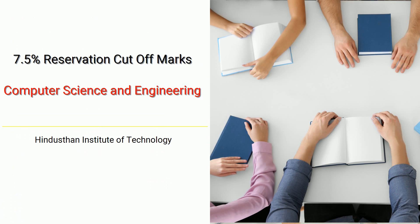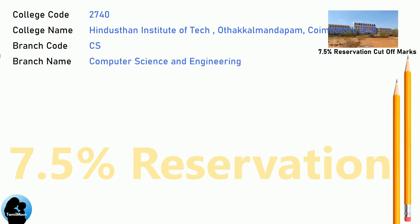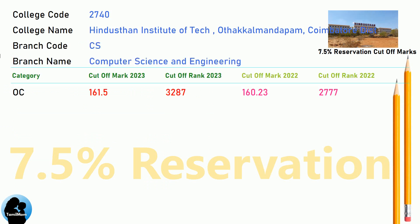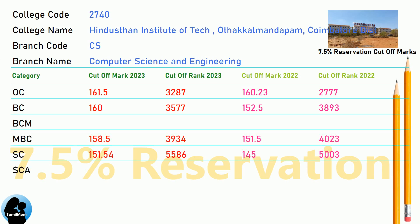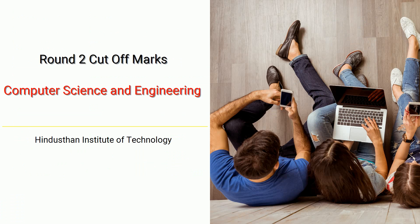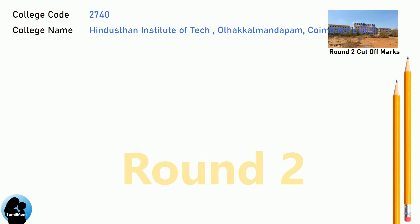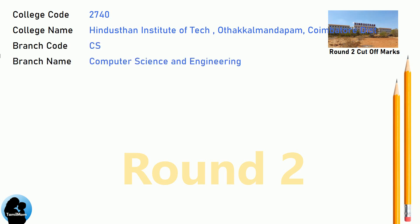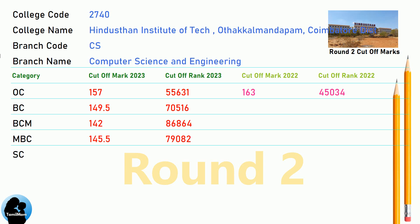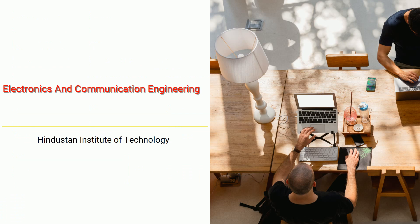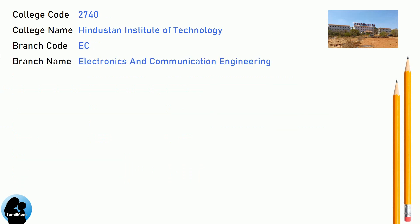DNEA 7.5 Reservation Cut-Off for Hindustan Institute of Technology in Computer Science and Engineering. DNEA 8.5 Reservation Cut-Off for Hindustan Institute of Engineering. DNEA 9.5 Reservation Cut-Off for Hindustan Institute of Technology in Computer Science and Engineering, and in Electronics and Communication Engineering.